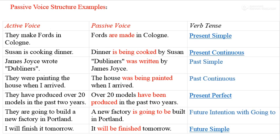For past continuous: active voice — 'they were painting the house when I arrived.' For present perfect: active voice — 'they have produced over 20 models in the past two years'; passive voice — 'over 20 models have been produced in the past two years.' You can see the object moves to first position in the passive sentence.